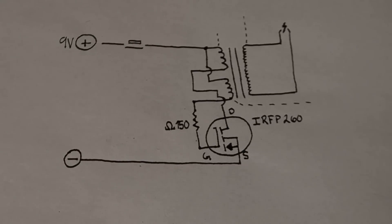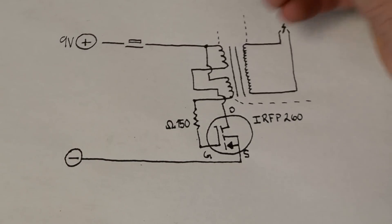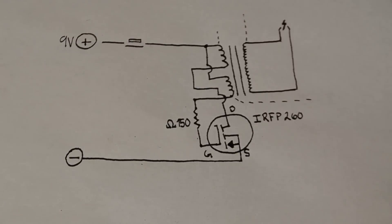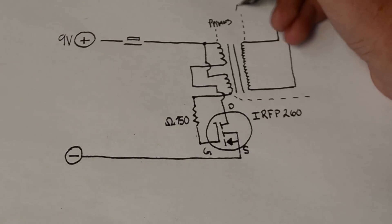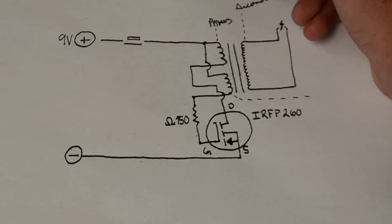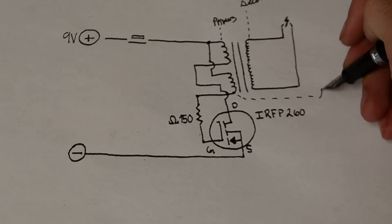Here's the schematic for our project that we'll build. Basically what's happening is we have a flyback setup to generate high voltage. Here we have our primary coil, here's our secondary, and over here is our feedback coil.